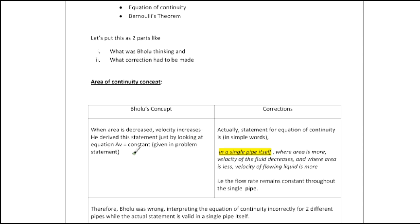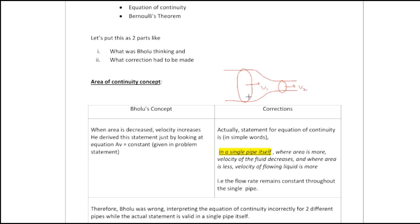But what corrections have to be made? The actual statement of the equation of continuity is valid in a single pipe itself — where area is more, velocity of the fluid decreases, and where area is less, velocity of the flowing liquid is more. Here is a single pipe: where area is more, velocity v1 is less, and where area is less, velocity v2 is more. This is valid just for a single pipe.